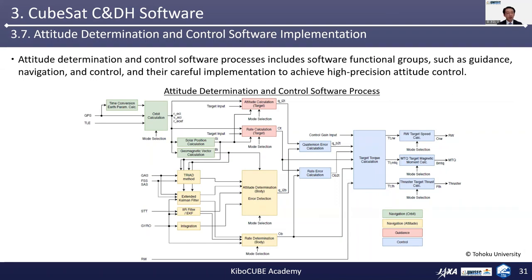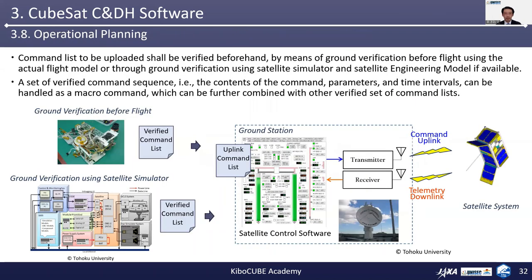Bare metal implementation requires more precise tuning of timing by the programmer, whereas real-time OS supports precise timing control of the execution of each single software task and ease of parallel execution for more than one software unit at a time. As an example of relatively complex software functionality, a block diagram of an attitude determination and control algorithm illustrates software processes including guidance, navigation, and control. Their careful implementation can achieve high-precision attitude control. Operational planning is also a very important topic closely related with C&DH software. The satellite operation is realized through satellite commanding by means of a carefully prepared command set sent from the ground station to the satellite.